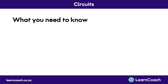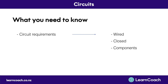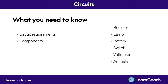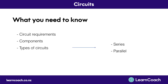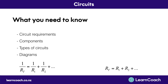From this video, what you need to know: we have three circuit requirements — wires, a closed circuit, and components. For components, you need to know resistor, lamp, battery, switch, voltmeter, and ammeter. You need to know the two types of circuits: series and parallel, and how to figure out and draw circuit diagrams. Lastly, these are the two equations — the total resistance for a parallel circuit, and the total resistance for a series circuit. All of this content is fundamental, so make sure you're confident answering these types of questions as they'll pop up a lot in all the exams.